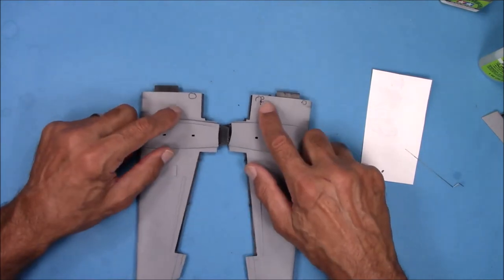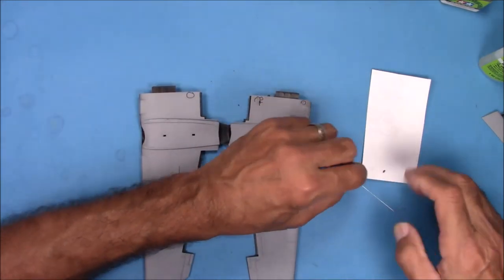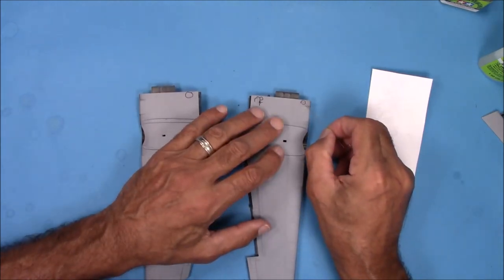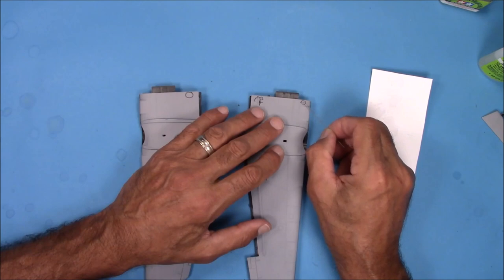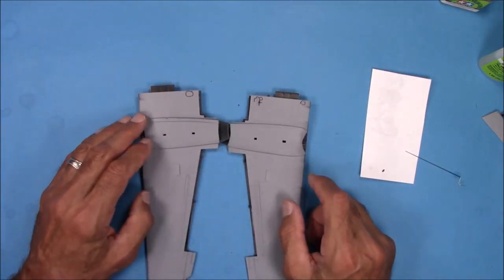There are some dimples on the inside areas of the wings where they meet the fuselage. The way I'll deal with that is I'll put a puddle of super glue here, and then I'll put a small bit of plastic strip in there, and then put more super glue on top of it, let it dry, and then just sand it smooth. That's how I'll fill these dimples.